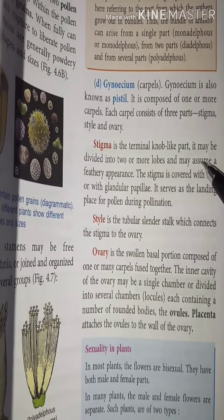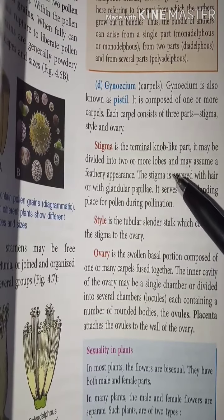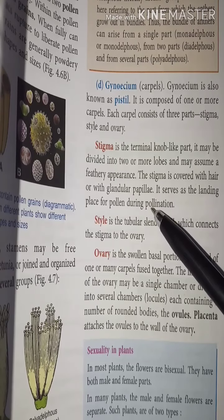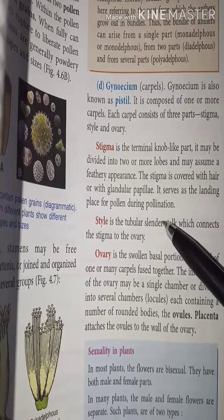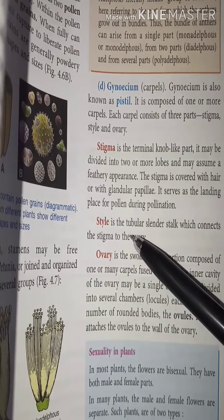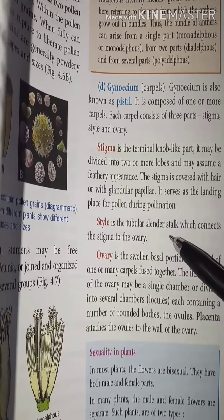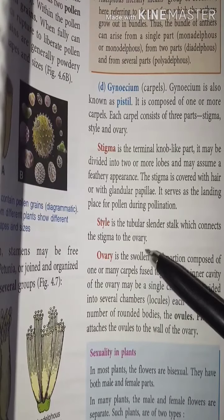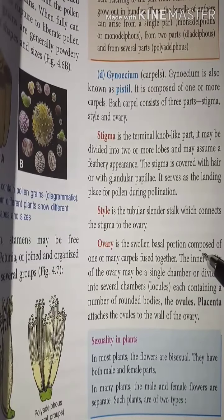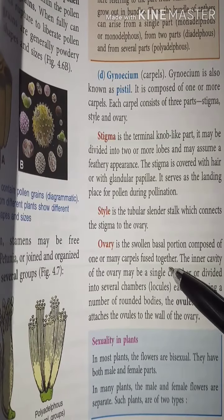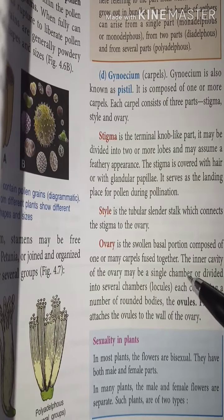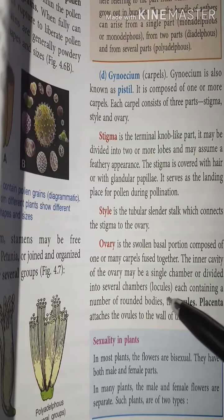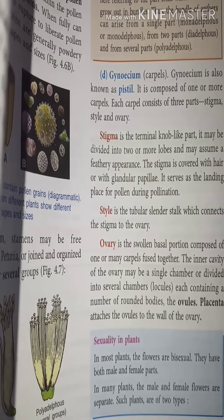The stigma is a terminal lobe-like part; it may be divided into two or more lobes and may assume a feathery appearance. The stigma is covered with hair or glandular papillae and serves as the landing platform for pollen during pollination. The style is a tubular cylindrical stalk connecting the stigma to the ovary. The ovary is the swollen basal part composed of one or many fused carpels, whose inner cavity may be a single chamber or divided into several chambers called locules, each containing ovules attached to the ovary wall.